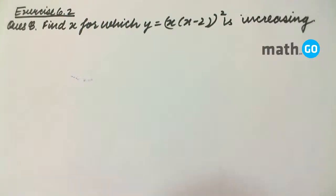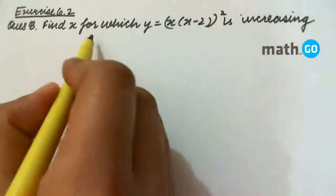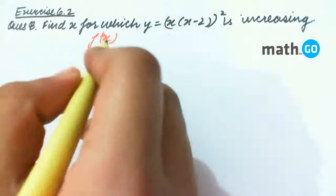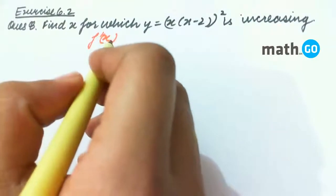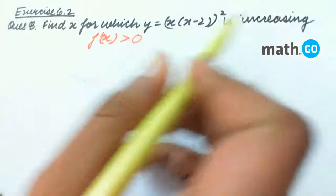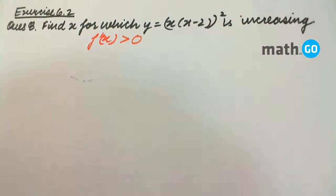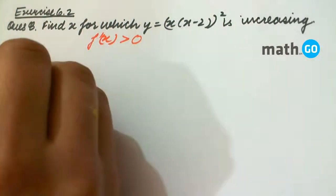Exercise 6.2, question number 8: find x for which y = x(x-2)² is increasing. For checking if a function is increasing or decreasing on an interval, we find f'(x). If f'(x) is greater than 0, it is increasing; if f'(x) is less than 0, it is decreasing.